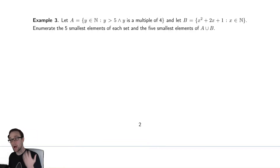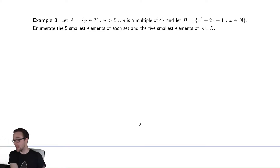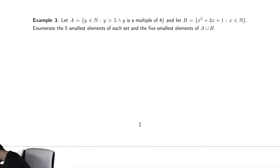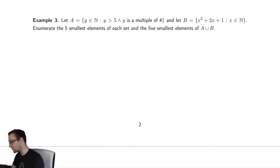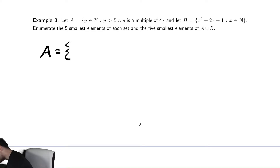Now that we've seen what our operations are, let's try to combine our ideas from our first two examples with the operation union that we looked at before. So let's see what set A is. A is the set of Y that are natural numbers greater than 5 and multiples of 4. So A is the set of numbers greater than 5 and multiples of 4.